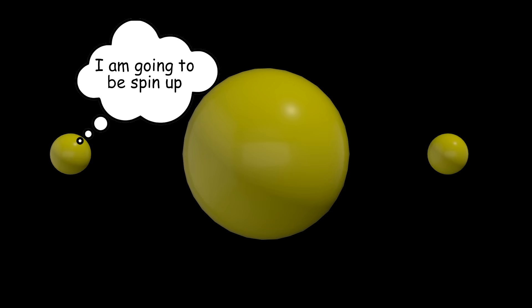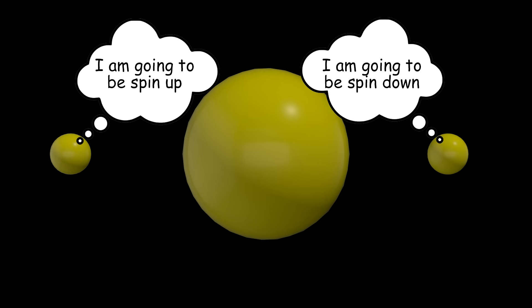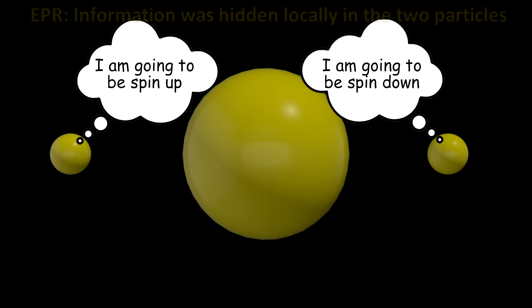In other words, their states contained the information locally so that when they were moved apart, no communication had to take place. The information that we were measuring was hidden inside the two particles. This is called local hidden variables.